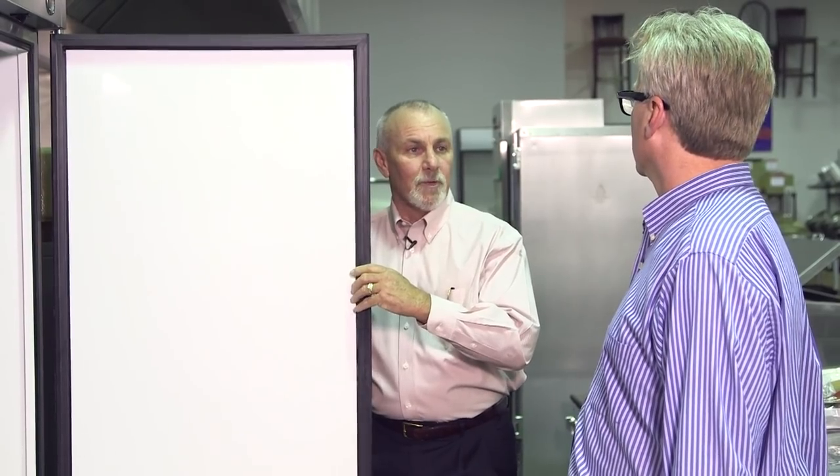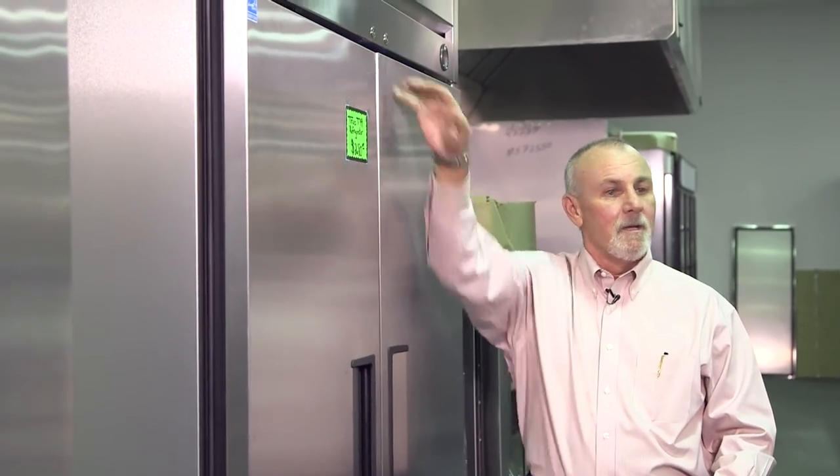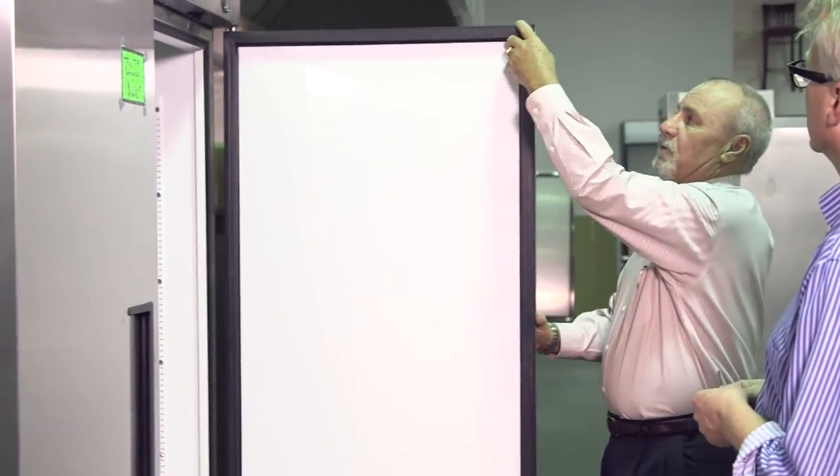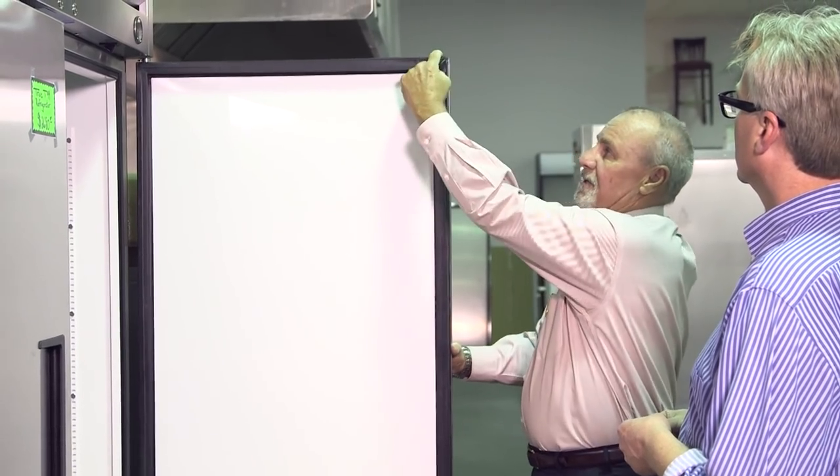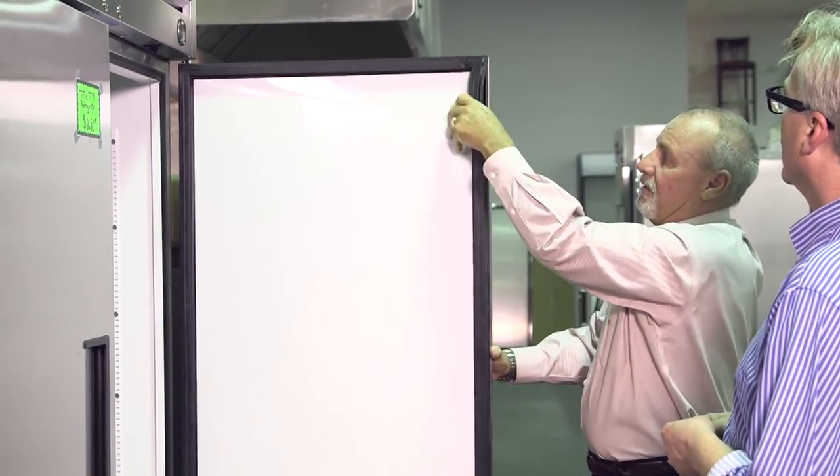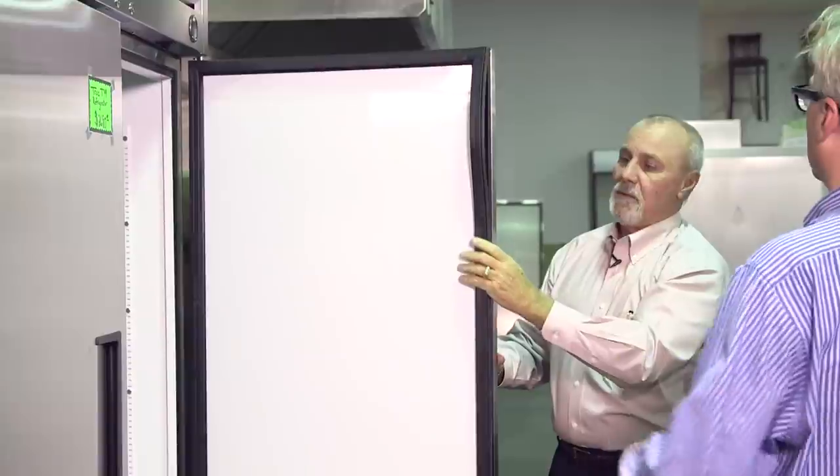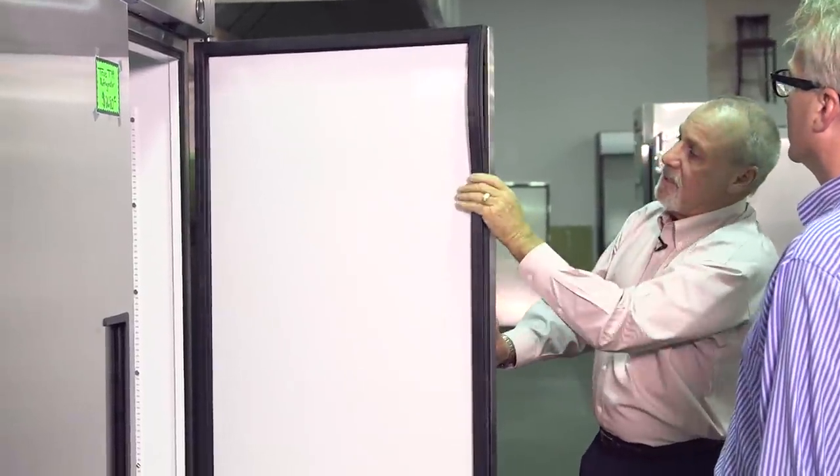One of the other things we didn't talk about is gaskets. Gaskets are a very big thing with commercial refrigeration. You want to make sure that you've got a good tight seal on this thing. This gasket will pop out very easily and I can change it. I can buy a new gasket, just snap it in place, and we're in business. That keeps the health department real happy too.